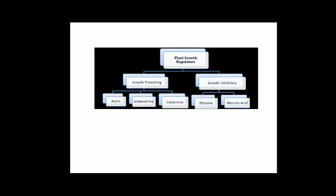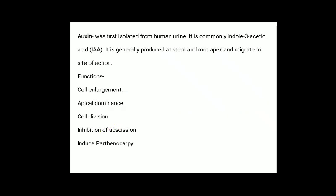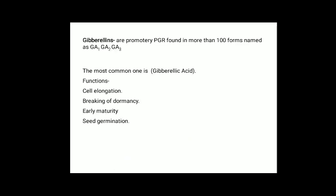Plant growth regulators are of two types: growth promoters and growth inhibitors. Growth promoters include auxin, gibberellins, and cytokinin. Growth inhibitors include ethylene and abscisic acid. Auxin was first isolated from human urine. It is commonly known as indole-3-acetic acid or IAA. It is generally produced at stem and root apex and migrates to the site of action. Functions of auxin include cell enlargement, apical meristem cell division, inhibition of abscission, and inducing parthenocarpy — the formation of fruits without fertilization.